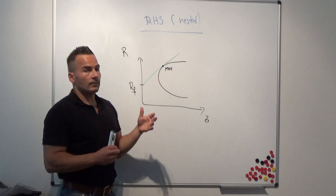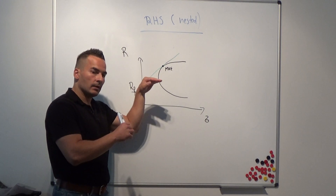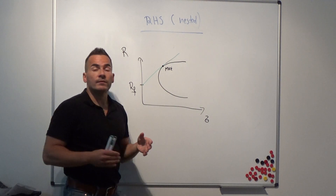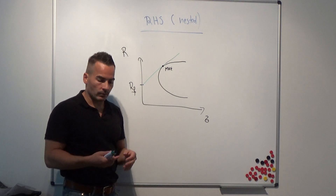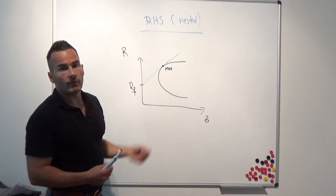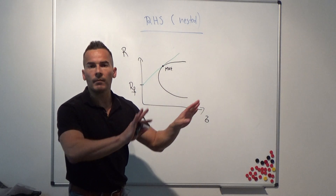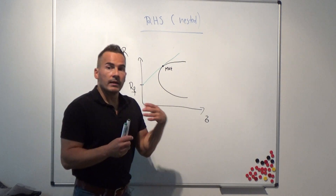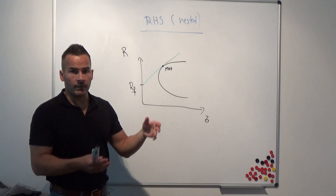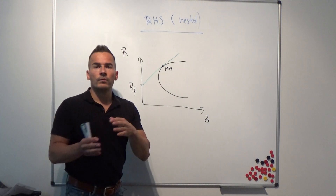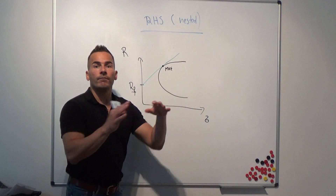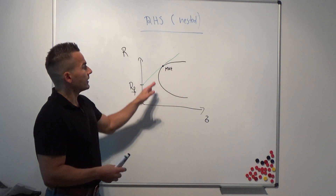If alpha-1 and alpha-2, when we regress the size and value factors on the CAPM, are not different from zero — meaning the CAPM can fully explain these two risk factors — then adding these risk factors to the portfolio would not increase the mean-variance frontier. In that case, we could just leave them out.